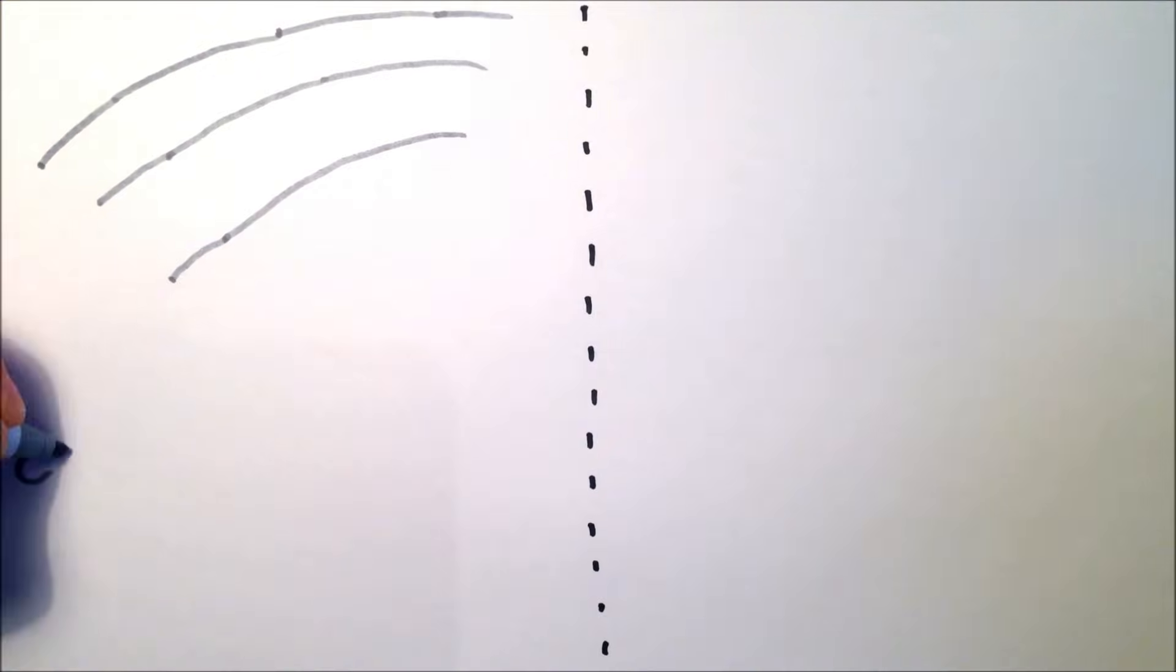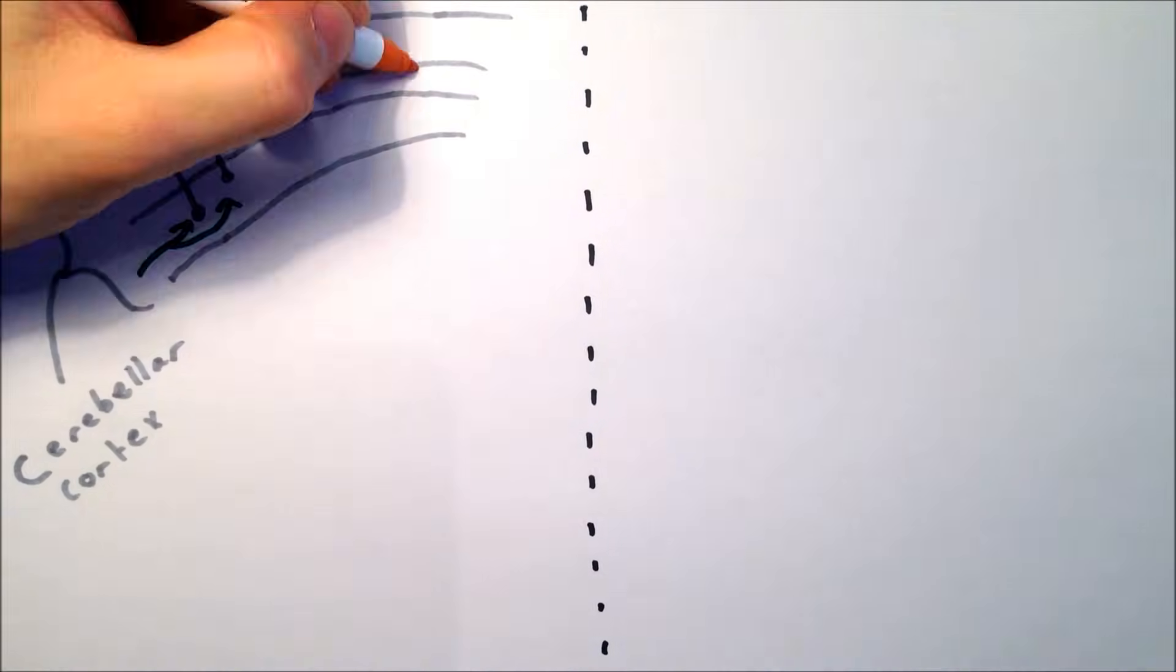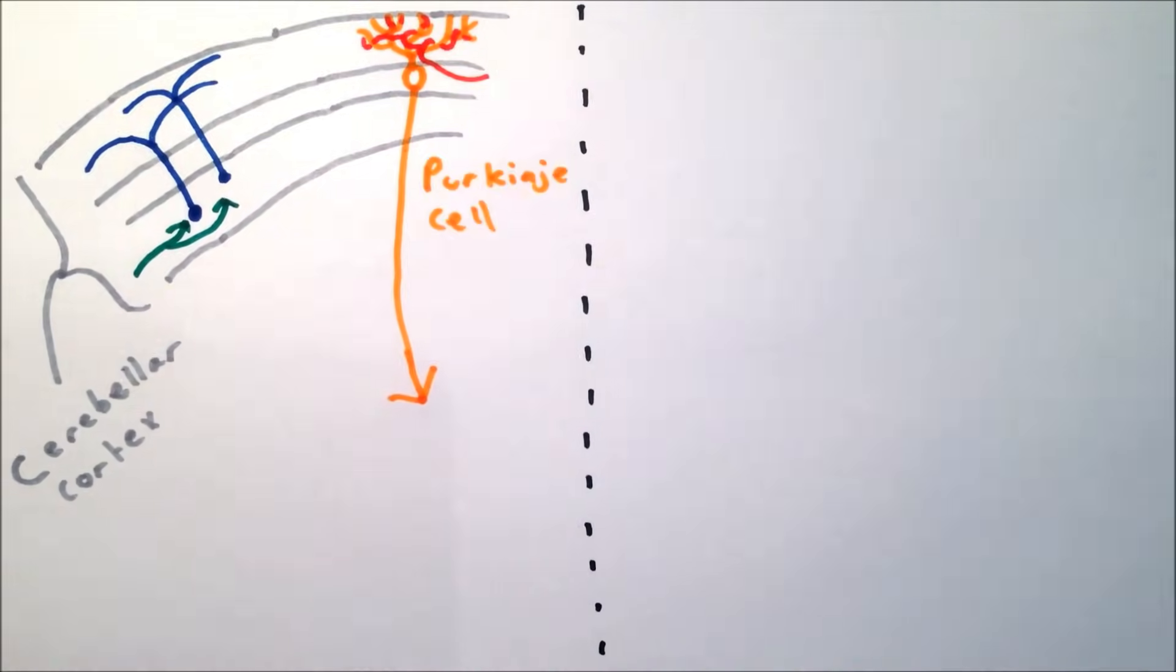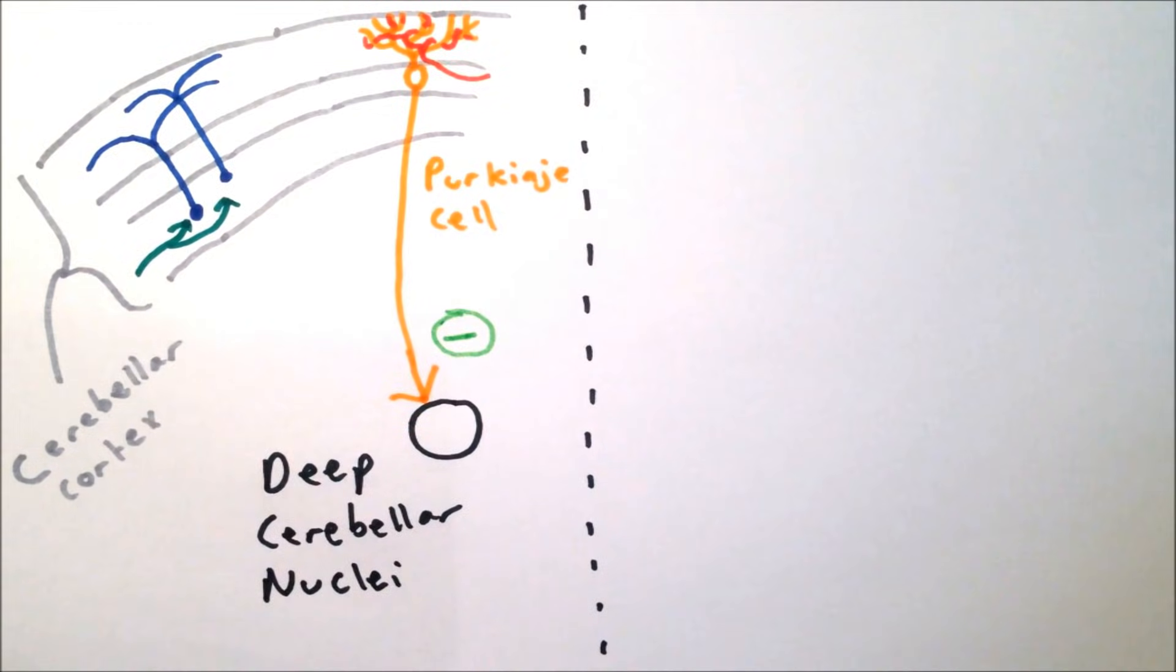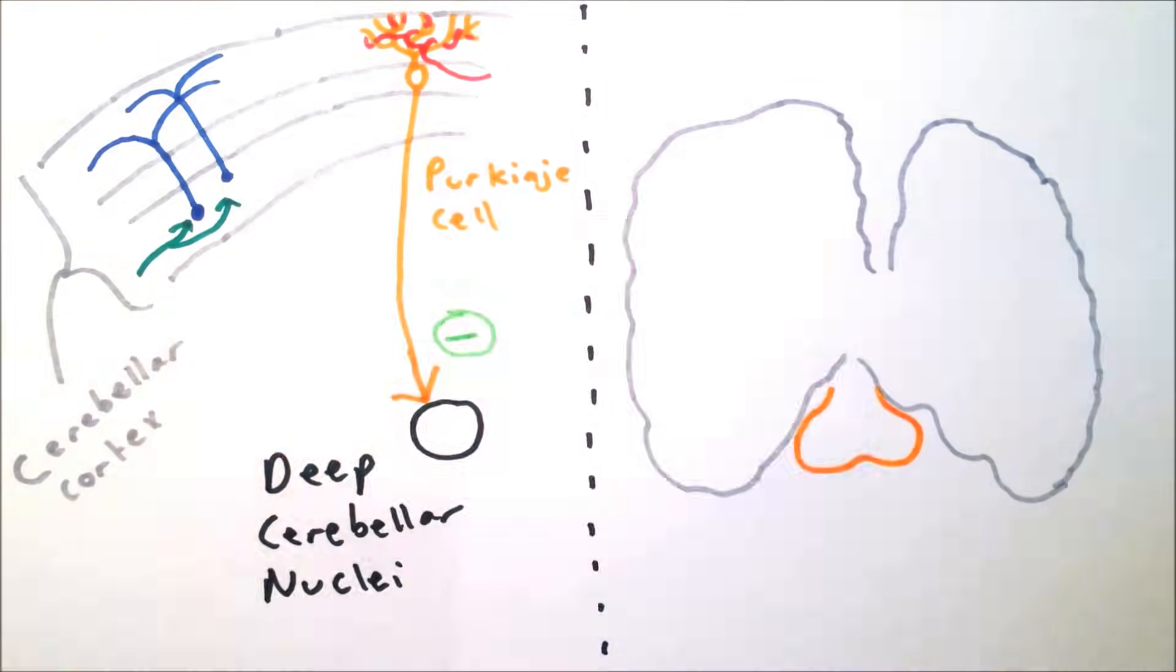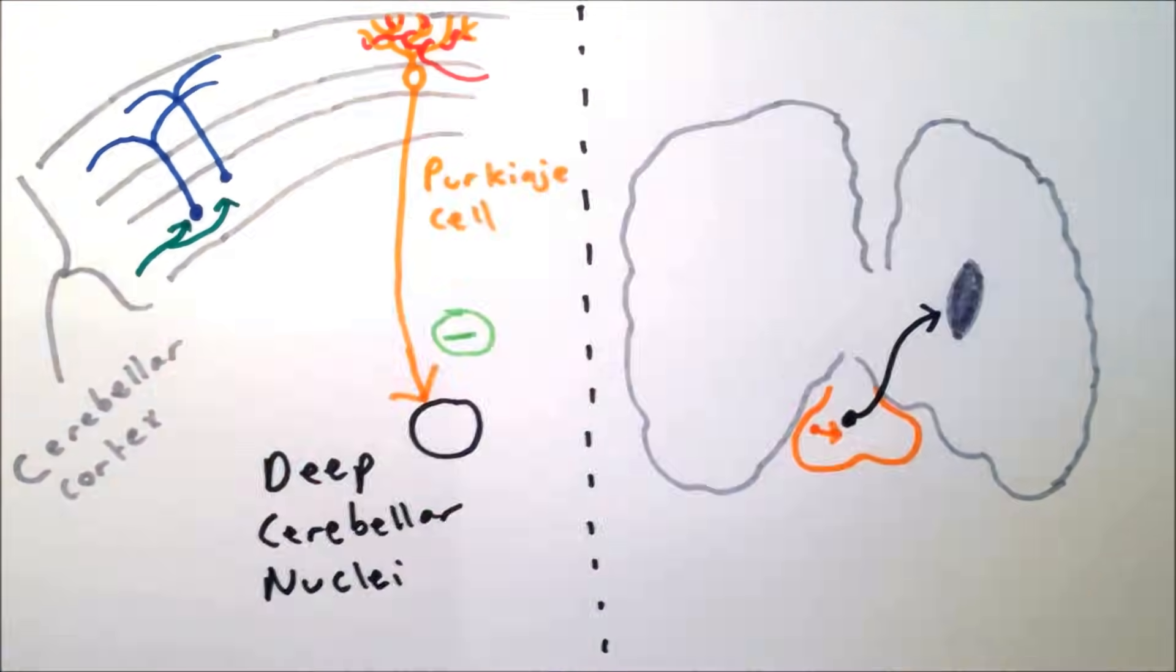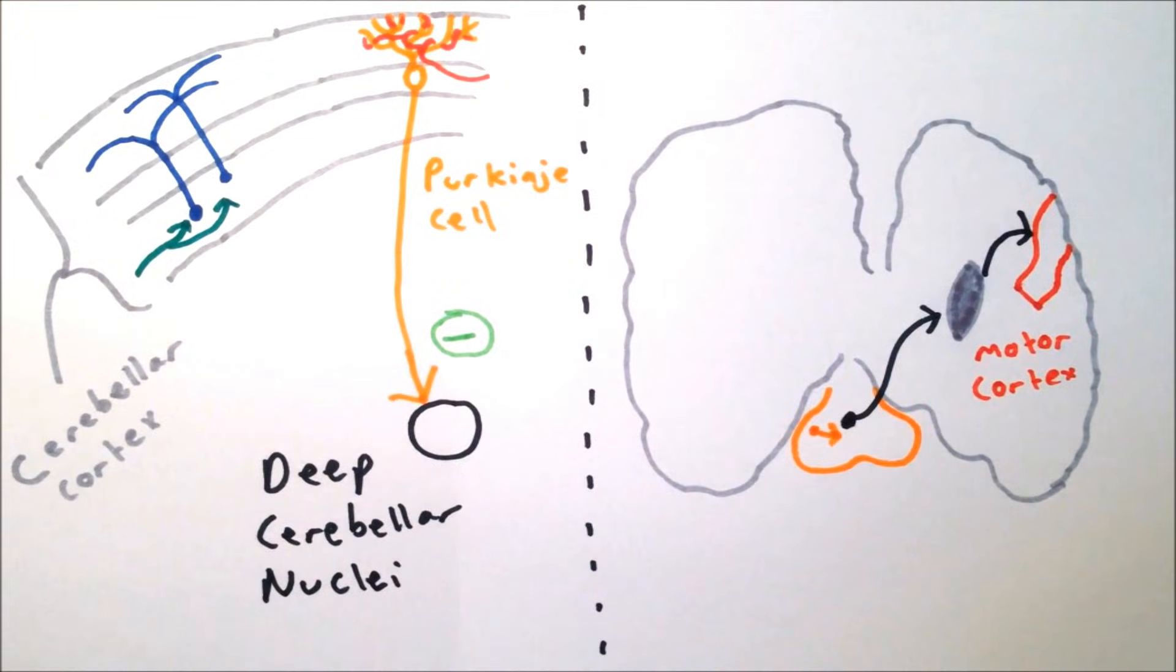The sole output of the cerebellar cortex is the Purkinje cell, which acts to inhibit the cells in the deep cerebellar nuclei. The output of the cerebellar nuclei is primarily to the thalamus, and then into the premotor and motor cortices to alter the production of motor movements.